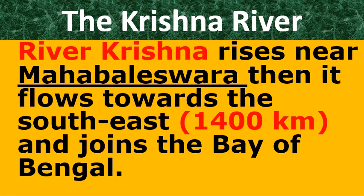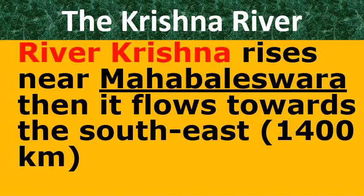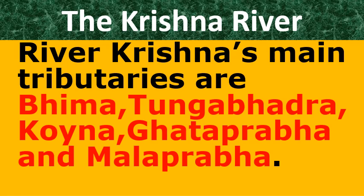Now let us know about Krishna River. River Krishna rises near Mahabaleshwar, then it flows towards the southeast. The total length of River Krishna is 1,400 kilometers and finally it joins the Bay of Bengal. Tungabhadra, Bhima, Koyna, Ghataprabha, and Malaprabha are all the tributaries of River Krishna.